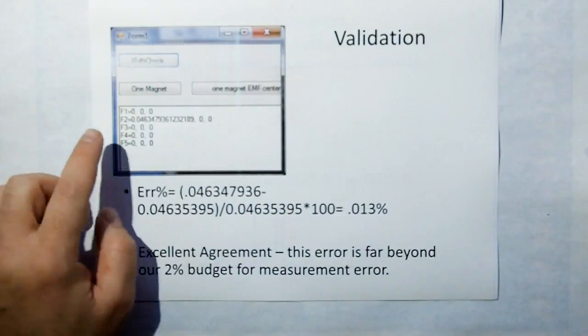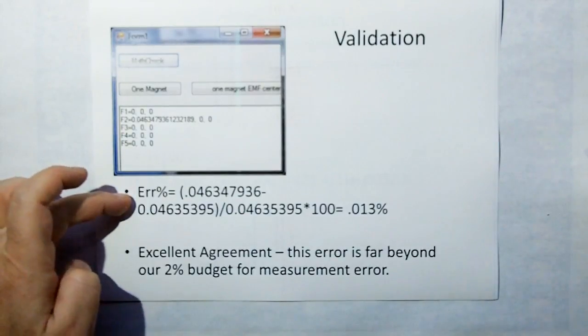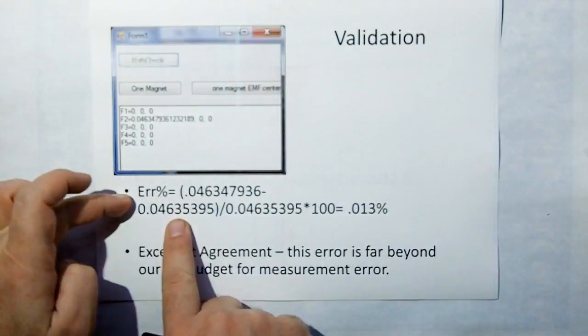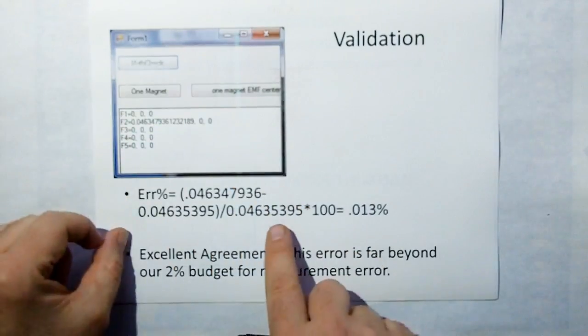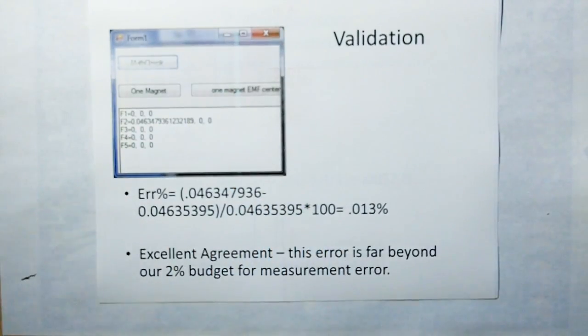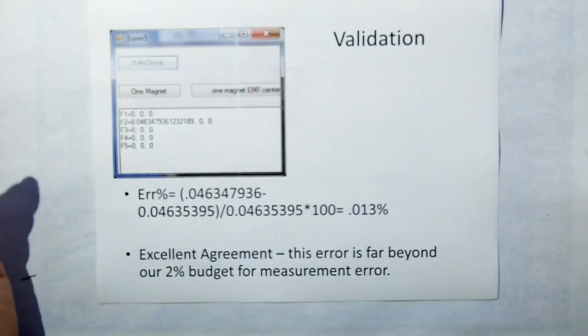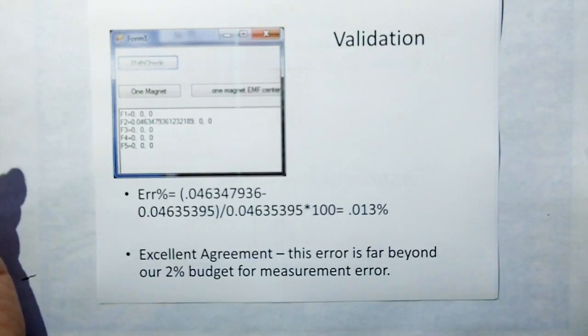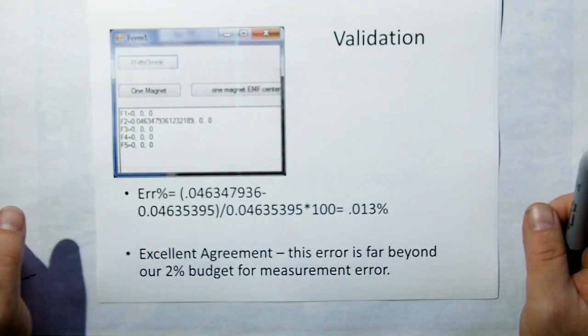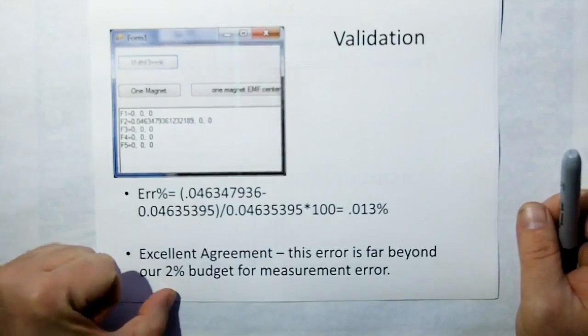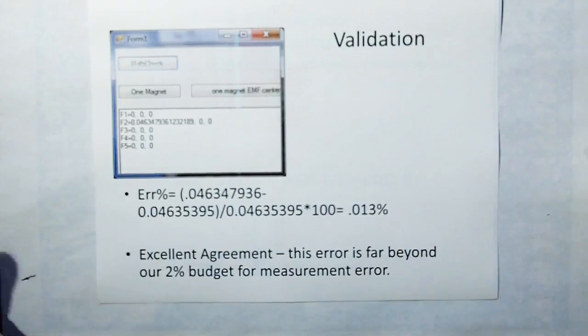Remember the software gave 46 millinewtons. If we do the error analysis where we take the software, subtract the analytical value, divide by the analytical value and multiply by 100, it says we're only off by 0.013 percent. That's excellent agreement for a numerical integration and a hand integration. It's far beyond the two percent budget we're allowing ourselves for measurement error. There's no way the instruments, only accurate to two percent, are going to see the 0.13 percent error from the software. We're in good shape here.